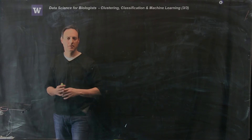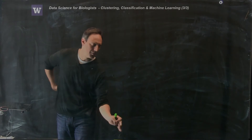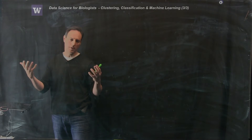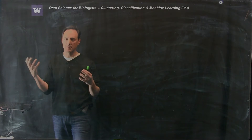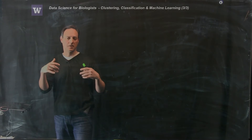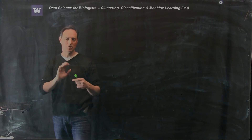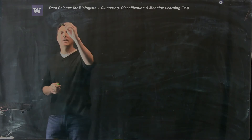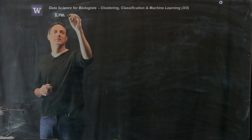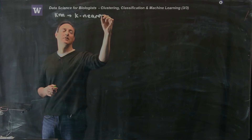This is the third part of the first lecture. What I want to talk about in this last piece is one of the most common and easiest algorithms out there — very much like k-means, it's extremely simple to think about and implement. It's called k-NN, or k-nearest-neighbors.